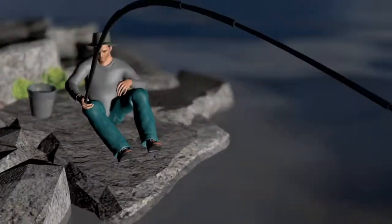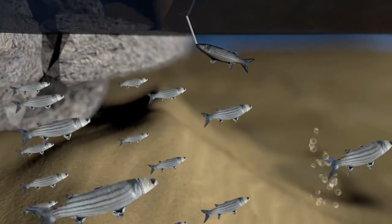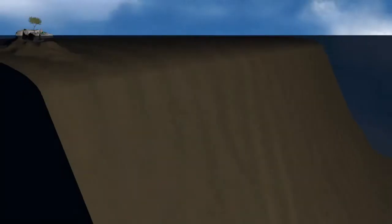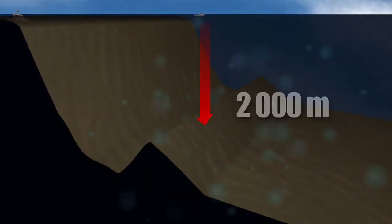Overfishing in shallow waters has exhausted species populations, so trawlers now cast their nets even deeper into the ocean, as far as some 2,000 meters down.